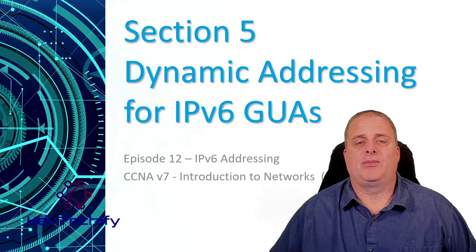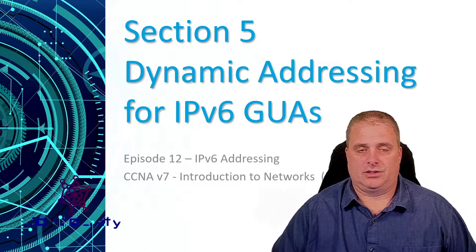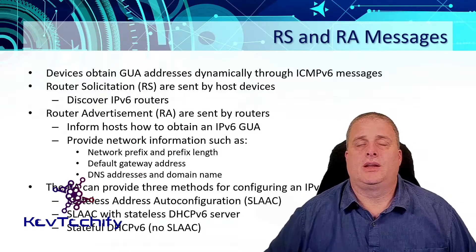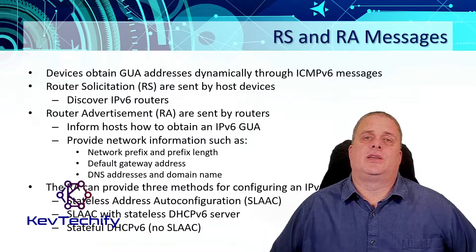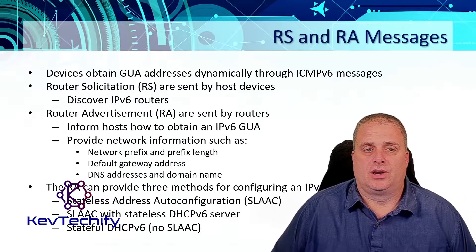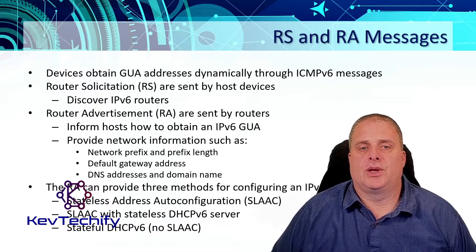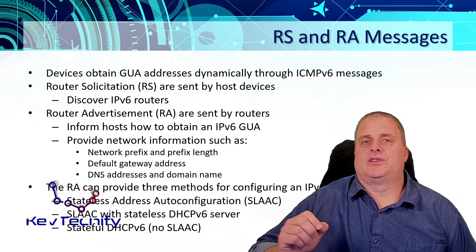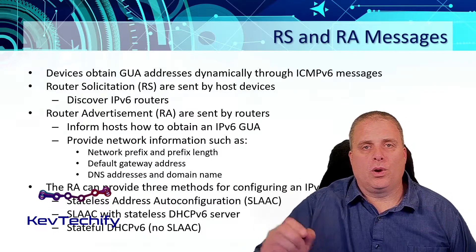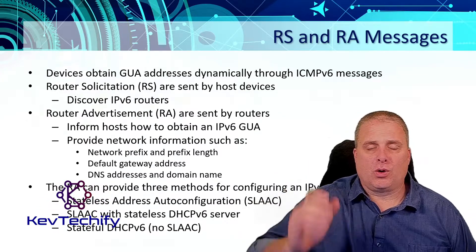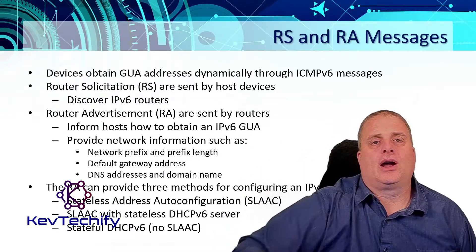Section 5: Dynamic Addressing for IPv6 Global Unicast Addresses. Devices can obtain global unicast addresses dynamically using ICMPv6 messages. The first one is a router solicitation message. They're sent by host devices — by end devices — to figure out where the routers are on the network, essentially asking: where is my default gateway?